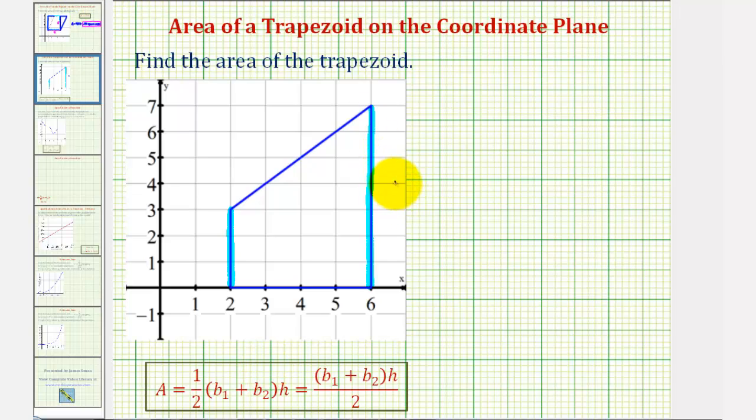So if we call this b sub one, because it's on the coordinate plane, we can determine the length. Notice how it's seven units long. B sub two would be the length of this side, which is three units long.